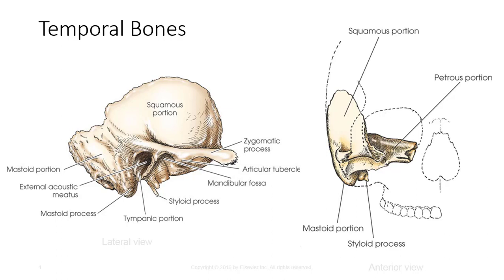The tympanic portion is located below the squamous and in front of the pteromastoid portion, and forms the anterior wall, inferior wall, and part of the posterior walls of the external auditory meatus. The styloid process is a slender, pointed bone projecting inferiorly, anteriorly, and slightly medially from the inferior surface of the tympanic portion. The pteromastoid portion combines petrous and mastoid portions and forms the inferior posterior wall of the temporal bone.